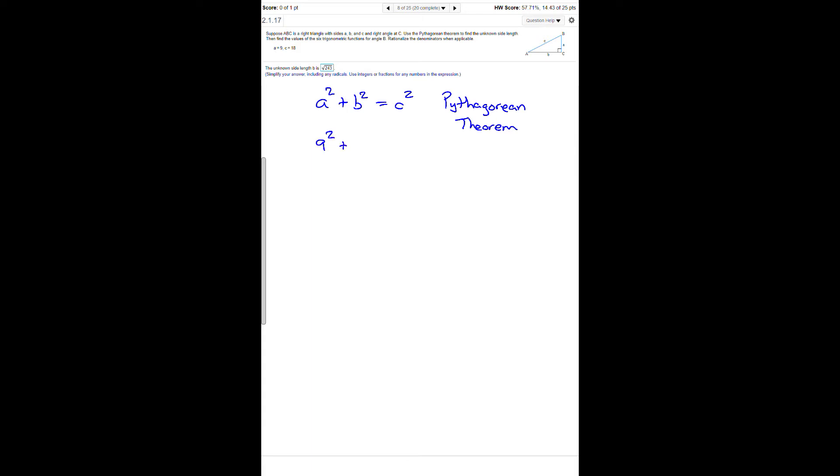We're trying to find side B, so that would be B squared, and then side C which is 18, so that would be 18 squared.